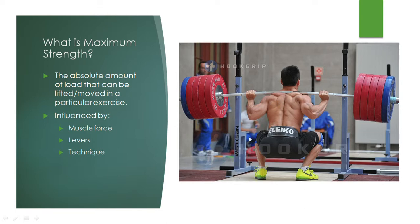Maximum strength is influenced by a number of factors. The main one is muscle force — how much force the muscle can actually produce when it contracts in order to move the limbs. It can also be influenced by levers, meaning the attachments of the tendons and the length of certain limbs and proportions. Technique can also play a role — if our technique is efficient, we can probably lift more weight in a given exercise.